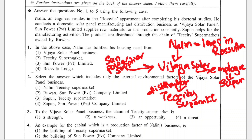Question 1: In the above case, Nalin has fulfilled his housing need from — Vijaya Solar Panel business, Teciti supermarket, Sun Power Private Limited, or Ross Villa Lodge? Nalin is residing in Ross Villa, so his housing need is fulfilled by Ross Villa. Vijaya Panel is his business — it's not giving him housing. Teciti is his distributor. Sun Power is a supplier. So the answer is 4 — Ross Villa Lodge.